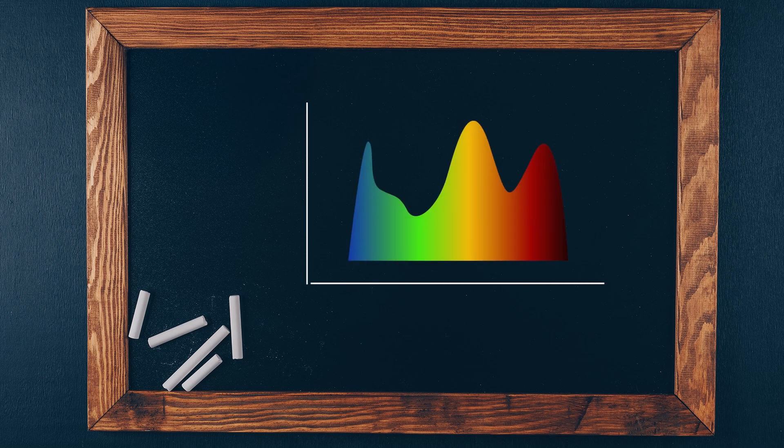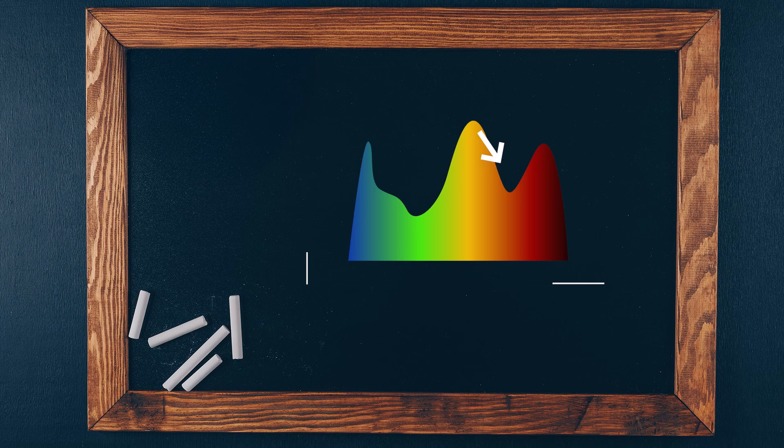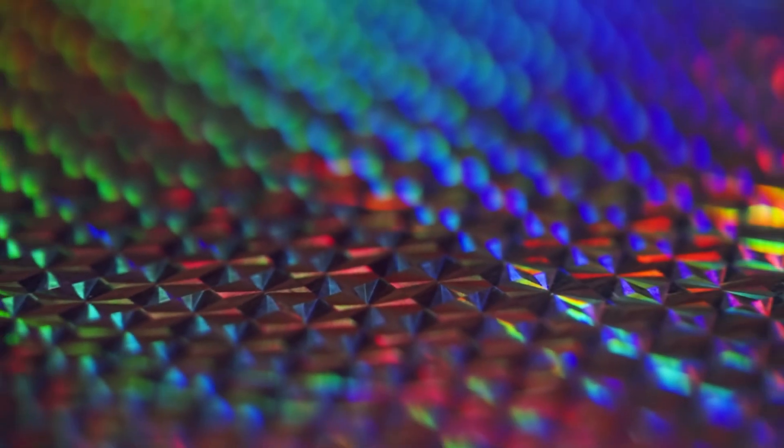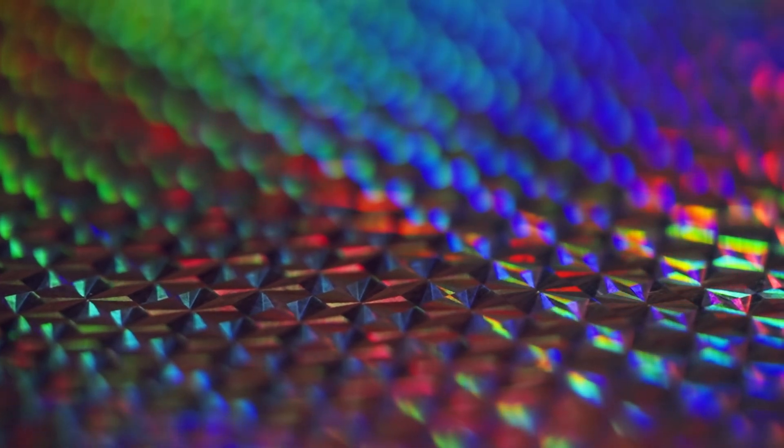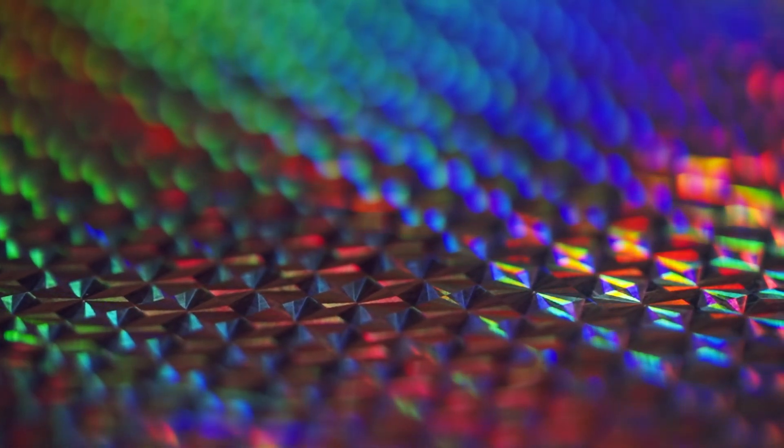For instance, we might observe less green light compared to red light. A dip in intensity at a specific wavelength indicates that the light has been absorbed. These absorption dips are called absorption lines, unique to each molecule, much like fingerprints. Just as fingerprints can sometimes be similar, absorption lines can also resemble each other. Since every molecule interacts with light differently, identifying these lines allows us to deduce the molecules present.